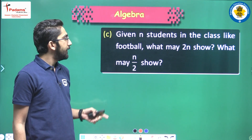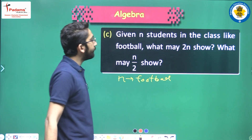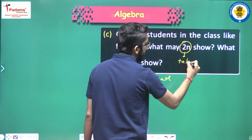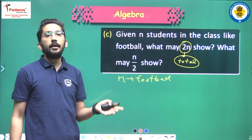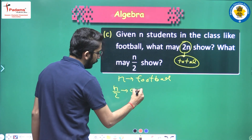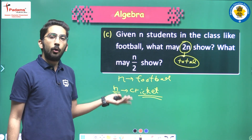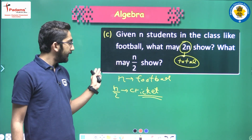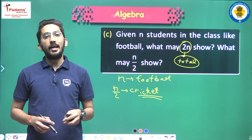Given Sarah's age today to be y years — think of her age in the future and in the past. y plus 7 is Sarah's age 7 years from now. y minus 3 is Sarah's age 3 years ago. y plus 4.5 is Sarah's age 4 and a half years from now. y minus 2.5 is Sarah's age 2 and a half years ago. Given n students in the class like football — 2n may show the total number of students in the class, and n divided by 2 can show the number of students liking another sport such as cricket.